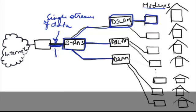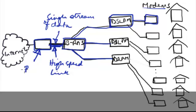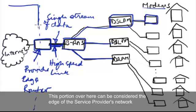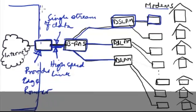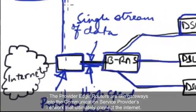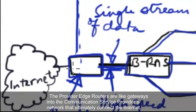This over here is the high speed link that we are talking about. And that box over here is the provider edge router. This portion over here can be considered as the edge of the service provider network. The provider edge routers are like gateways into the communication service provider's network that ultimately connects to the internet.